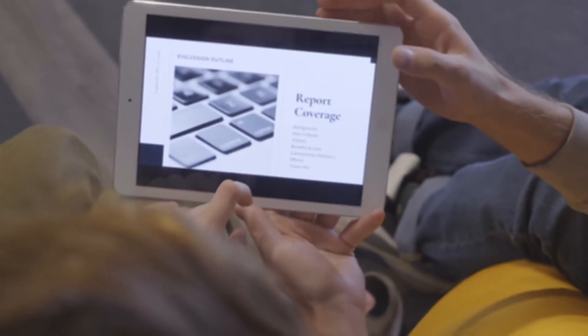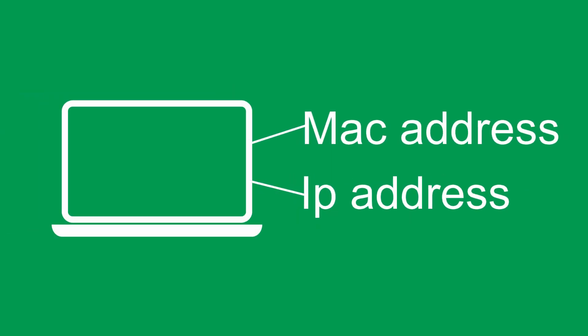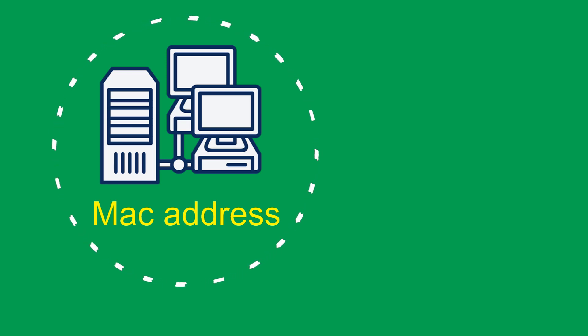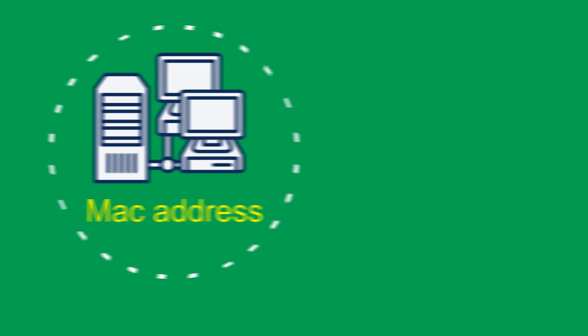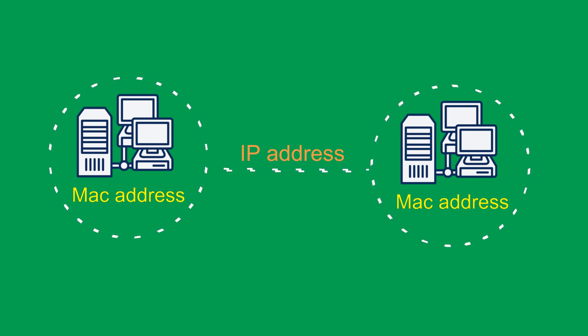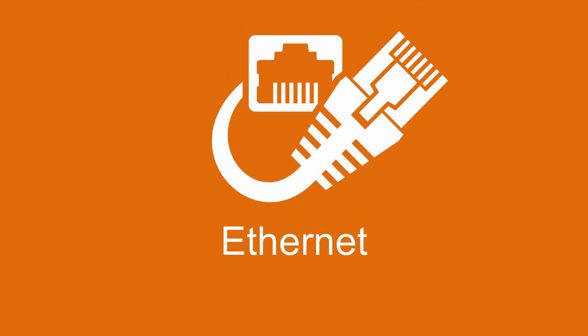A computer network is nothing more than an electronic delivery system, and like any successful delivery system, addressing plays an important role. For every device that connects to a network, two addresses are needed: the MAC address, also called the physical address, is used at the local level of the network, and the IP address, known as a logical address, is used for transmitting across networks.